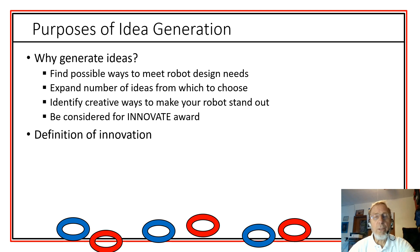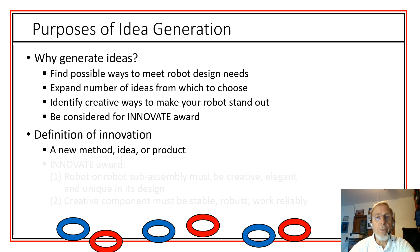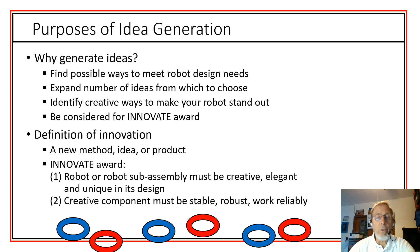What is the definition of innovation? Innovation is simply a new method, an idea or product, something that's new and different. For the Innovate Award, specifically they state that the robot or some sub-assembly must be creative, elegant, and unique in its design. And this creative component must be stable, robust, work reliably.